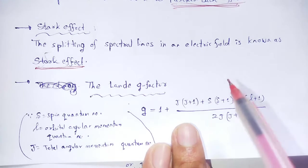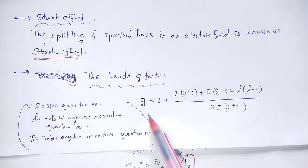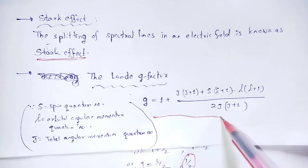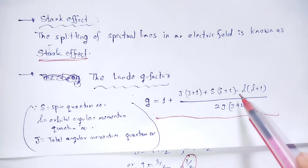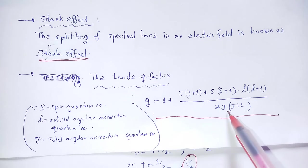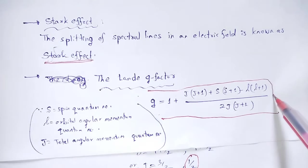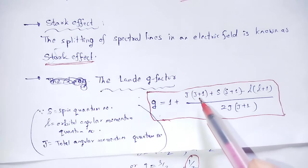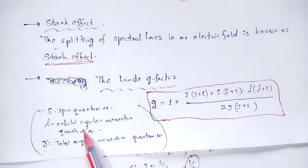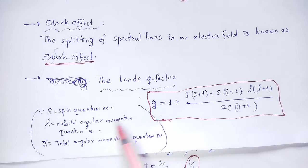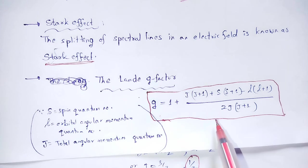Next: the Landé g-factor. The Landé g-factor value is: g equals 1 plus [J(J+1) + S(S+1) - L(L+1)] divided by 2J(J+1). Here, small g stands for the Landé g-factor, S is the spin quantum number, L is the orbital angular momentum quantum number, and J is the total angular momentum quantum number where J equals L plus S.